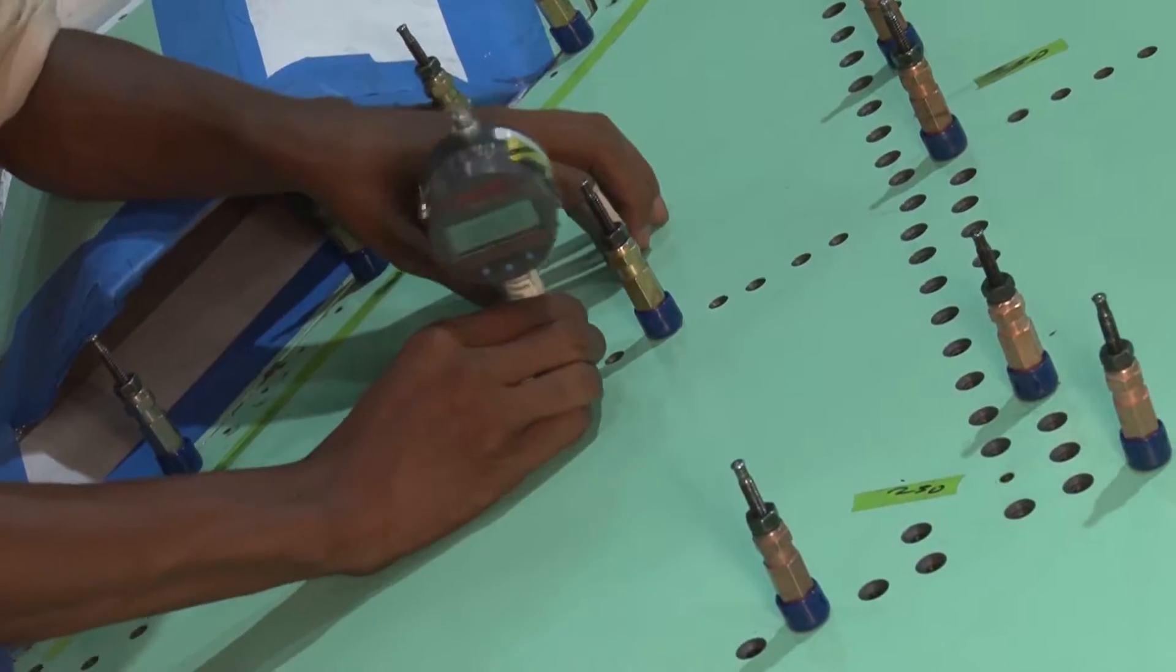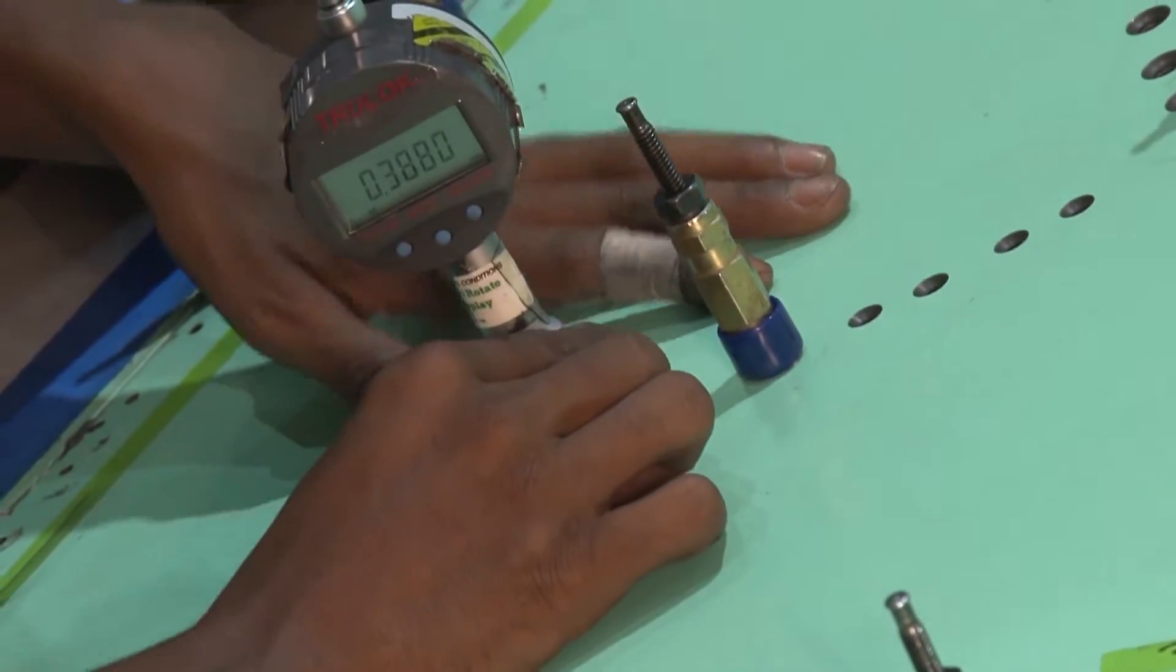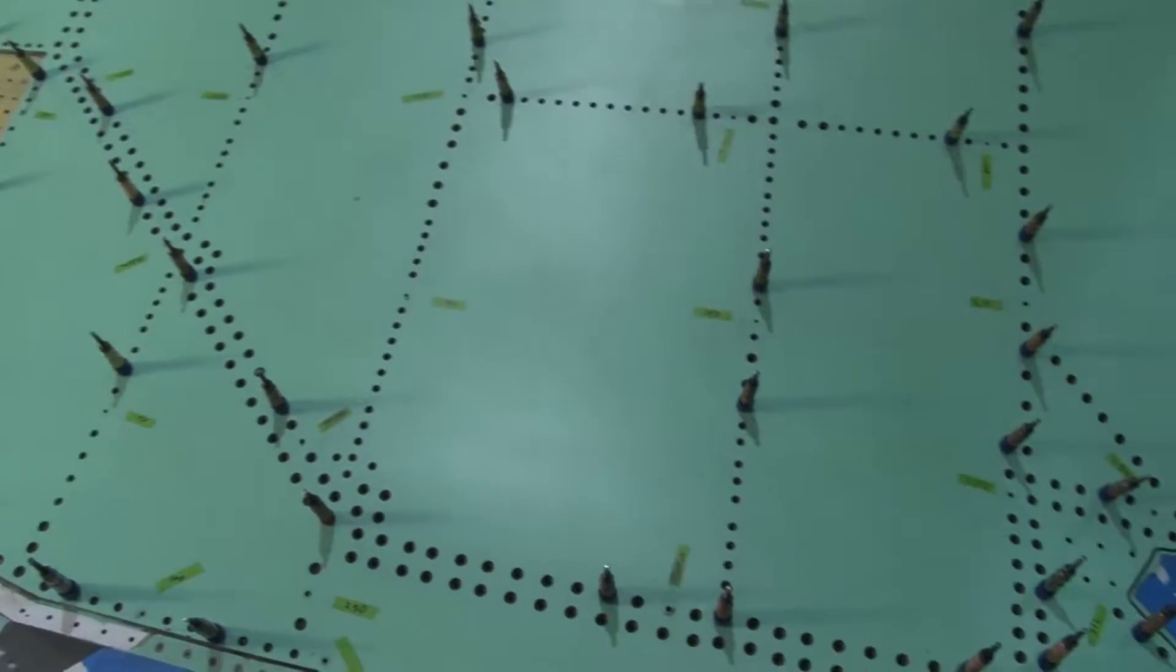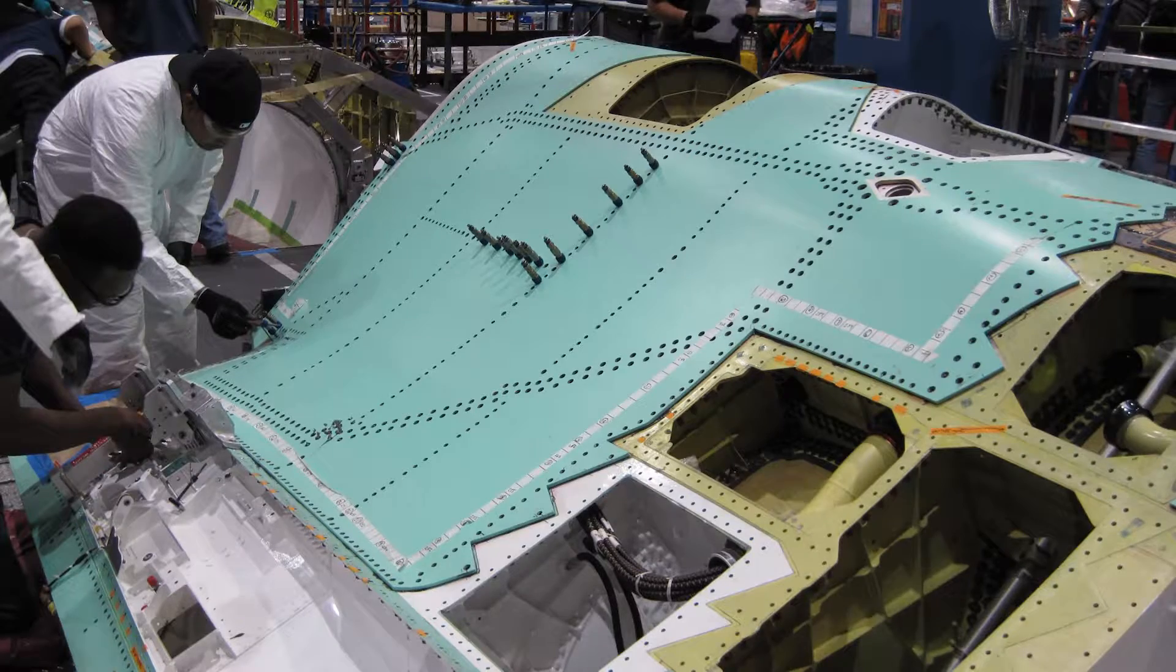Any variations in the thickness of materials meant the fasteners had to be removed and replaced. And every time you have a mechanic that is referencing a blueprint, referencing it two, three, four, five times to make sure he's got the right type of fastener in the right hole, in the right spot, that costs time.